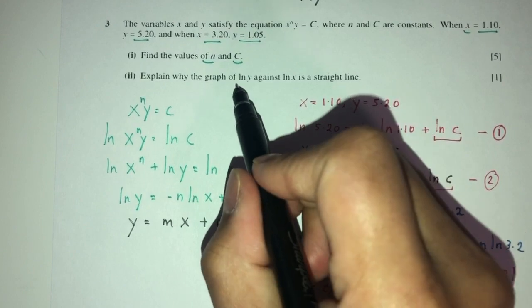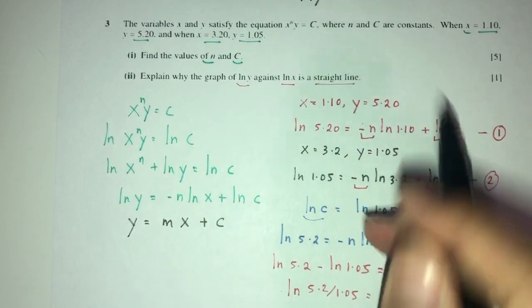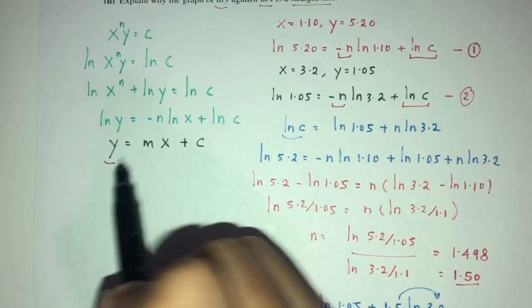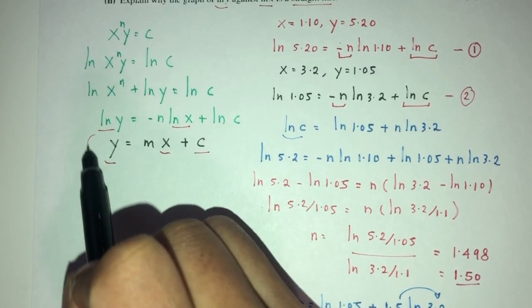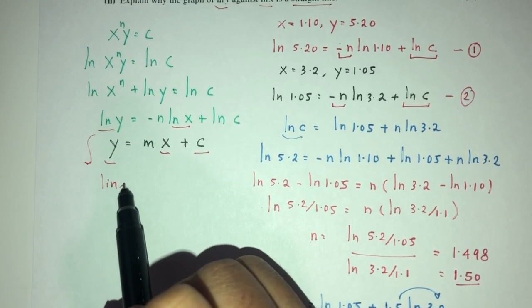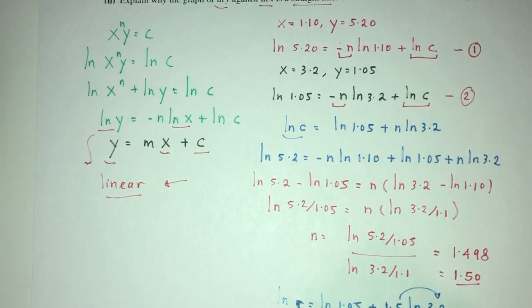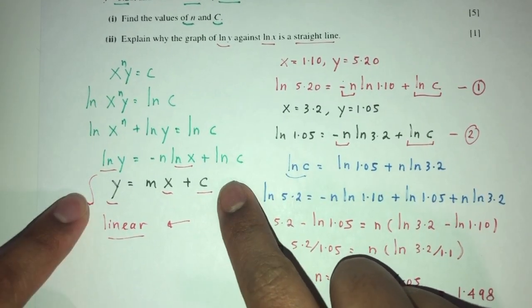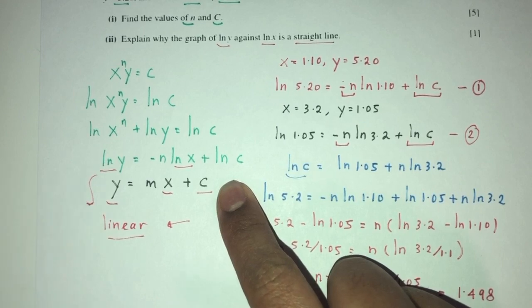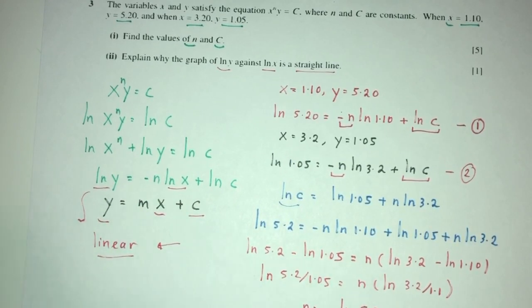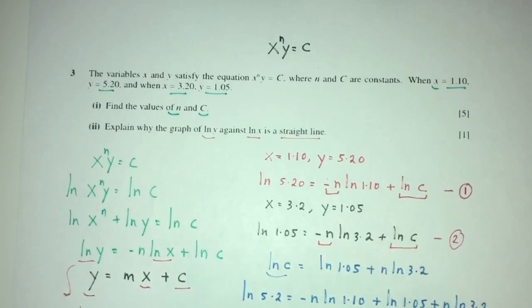For part two, we need to explain why the graph of ln(y) against ln(x) is a straight line. By expanding and showing that ln(y) = −n·ln(x) + ln(c), this resembles the straight line equation y = mx + c. Since it is linear, the graph will form a straight line — you need to show this resemblance clearly to earn your mark.